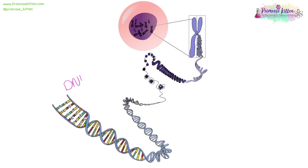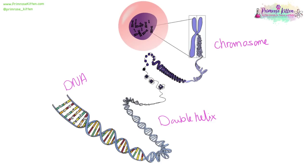DNA is a long strand of deoxyribonucleic acid, made up of lots of letters — A's, T's, C's, and G's — which twist into a double helix. This double helix is still very long so it further coils into a chromosome, which is located in the nucleus of a cell.